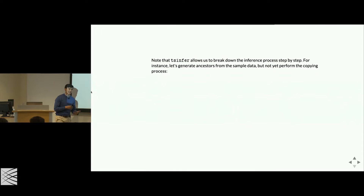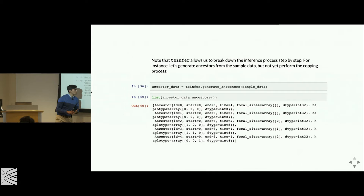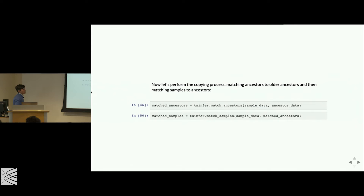You can also break up the two steps if you want to create synthetic ancestors. Step one generates ancestors based around focal sites, and you can manipulate these. Then step two is just the matching step. At any point you can step in and do whatever manipulations you want — it's very flexible.